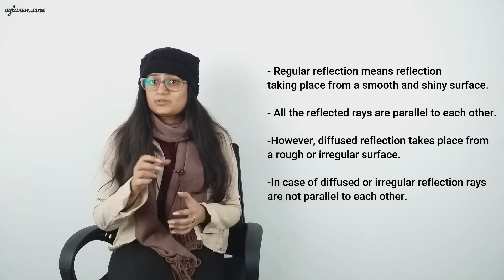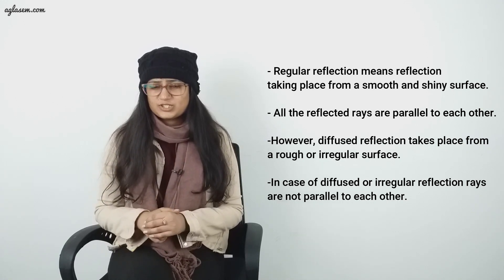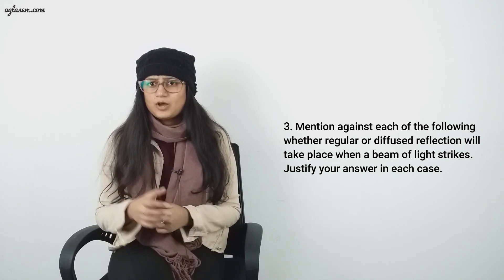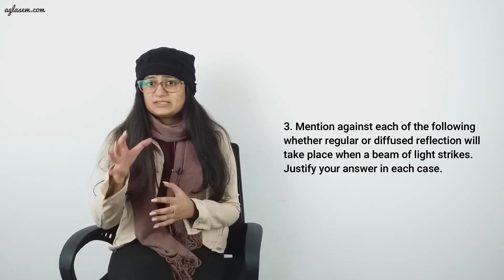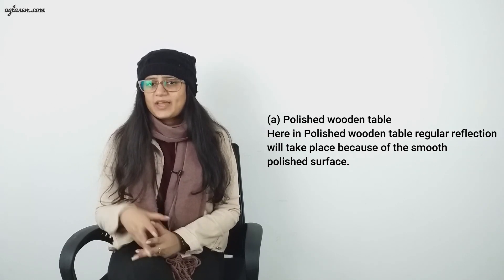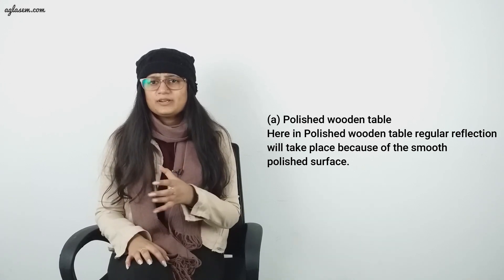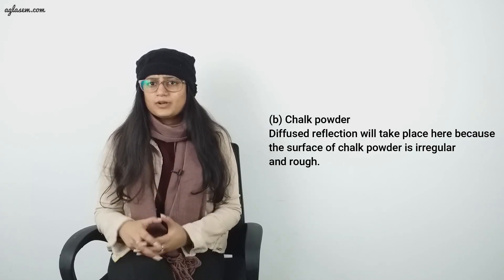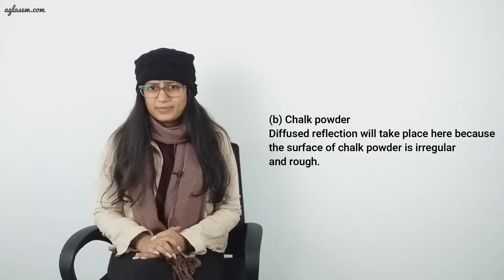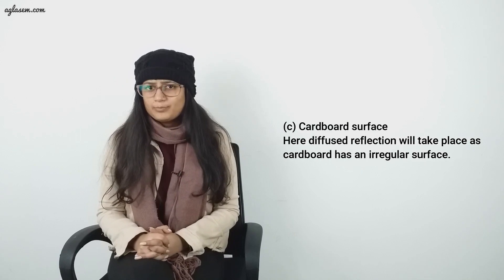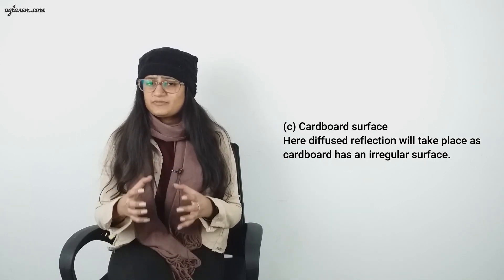Question number 3: Mention against each of the following whether regular or diffused reflection will take place when a beam of light strikes. Justify your answer in each case. Part A: Polished wooden table. Here, regular reflection will take place because of the smooth polished surface. Part B: Chalk powder. Diffused reflection will take place here because the surface of chalk powder is irregular and rough. Part C: Cardboard surface. Here, diffused reflection will take place as cardboard has an irregular surface.